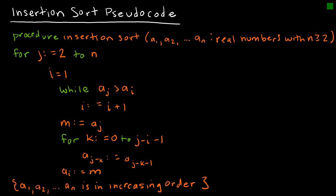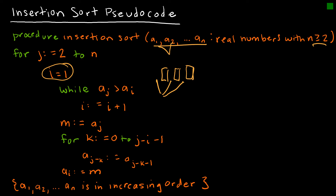The insertion sort pseudocode has quite a bit going on, but essentially we have values from 1 through n with two or more values. For j equals 2 to n, starting at i equals 1, we compare the value at j to the one before it and switch their order if necessary. If not, we go on to the next one. Step by step, we determine where each value goes in the already-sorted portion. Our output is all values in increasing order.